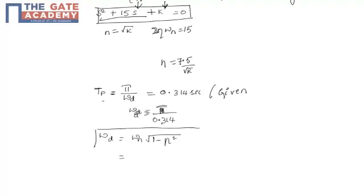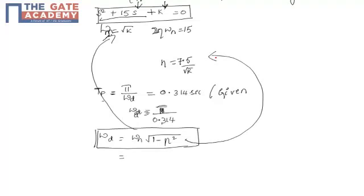We also know that ω_d equals ω_n multiplied by √(1 − η²). Substituting ω_n = √k and η = 7.5/√k into this equation, we get √k × √(1 − (7.5/√k)²) equal to 10.